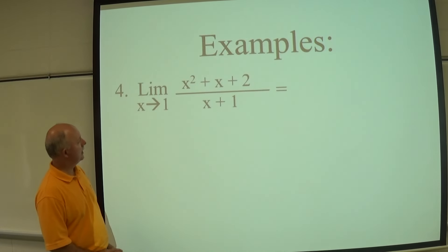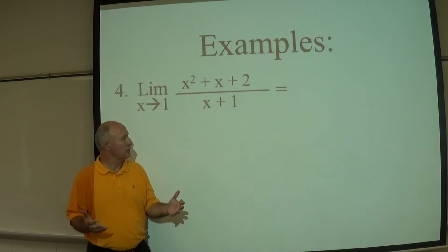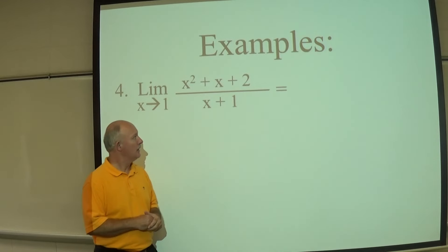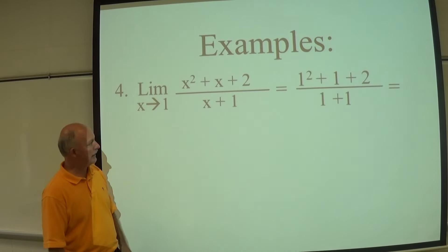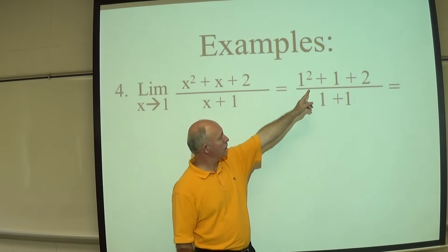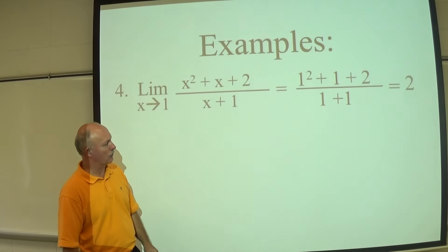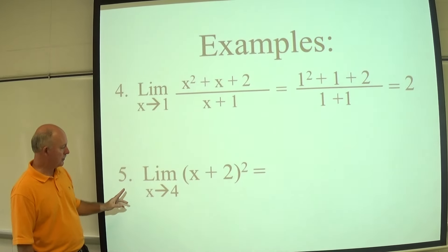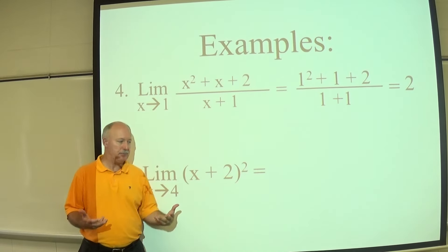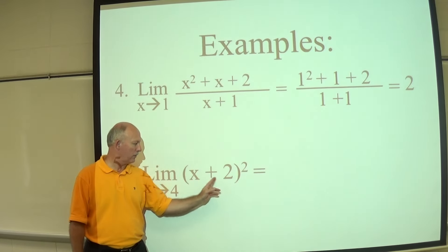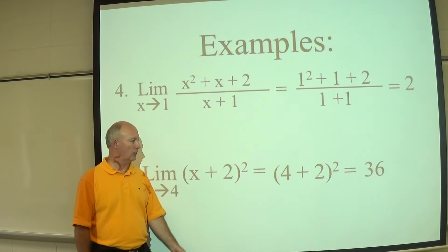The limit as X approaches 1 of X squared plus X plus 2 divided by X plus 2: substitute 1 in for every X, giving 1 plus 1 plus 2 over 1 plus 2, which is 4 divided by 2, or 2 — this is the quotient property. Next, using the power property: substituting 4 in for X gives 4 plus 2, which is 6, and 6 squared gives 36.